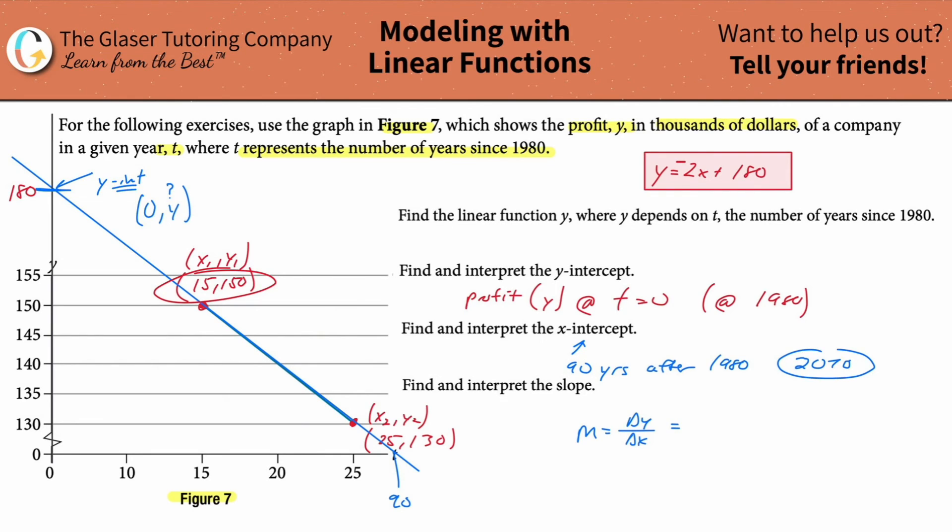So in this case, it's the change in dollars. It says profit Y in thousands of dollars. So this represents thousands of dollars per year, because time is in years. So the slope we found a value of negative two, but it's not negative $2 per year. It's negative 2000 because it was in thousands of dollars. So negative $2,000 per year. In other words, the profit of this company over the period of time being studied is decreasing by $2,000 per year.